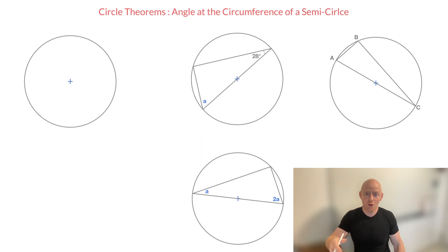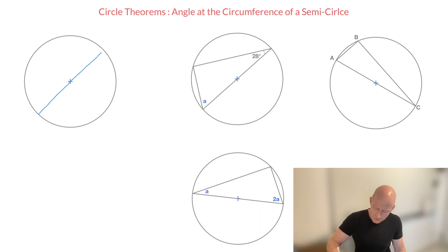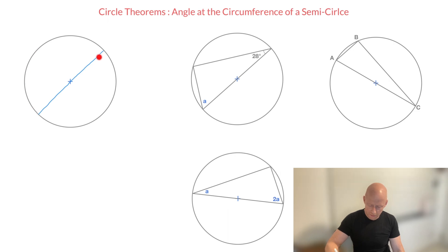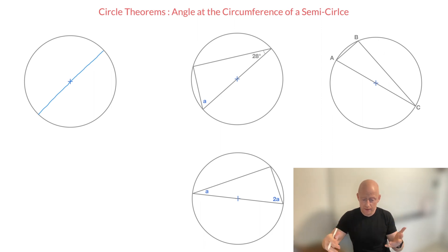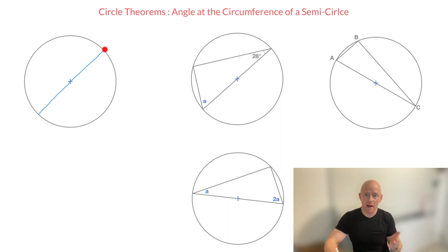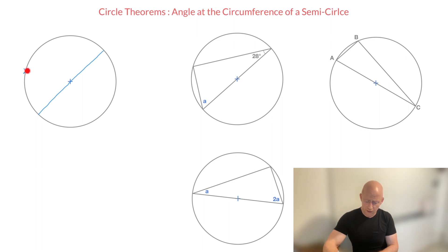All I need to do for that is to draw a diameter for this circle. For instance, I could draw a diameter right here, passing through the center. This diameter splits this circle into two semicircles — we have half a circle up here and half a circle down here. And what the theorem tells us is that the angle at any point along the circumference of a semicircle is a right angle. Let's say I consider the semicircle at the top and place a point anywhere along its circumference, for instance, right here.